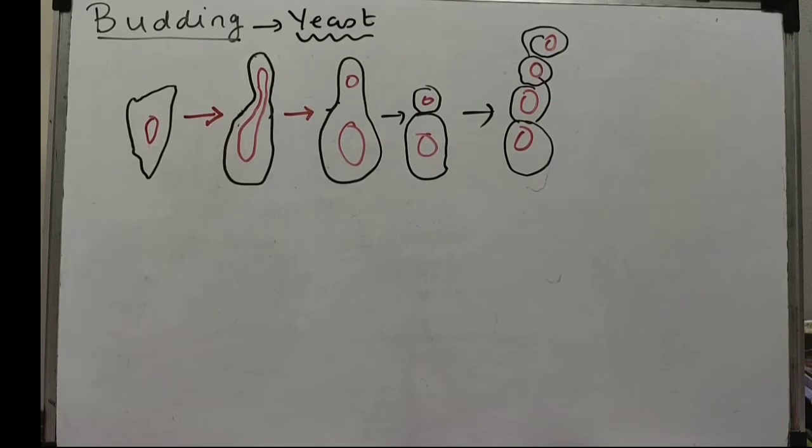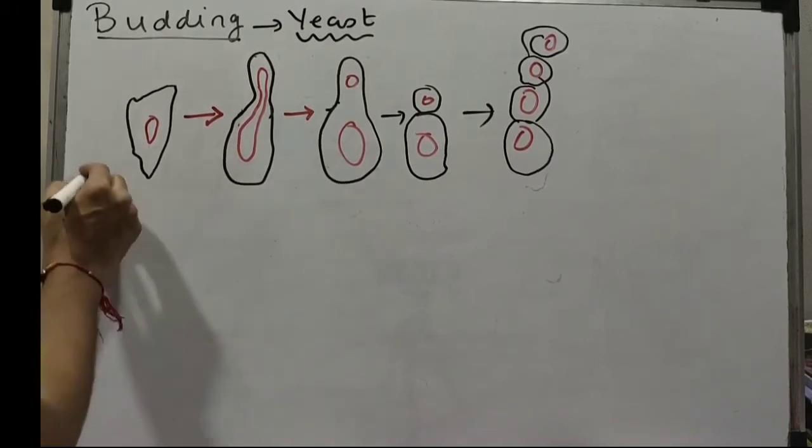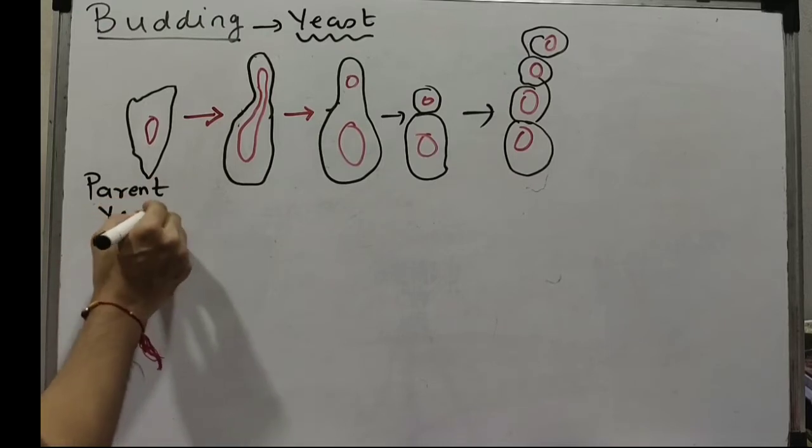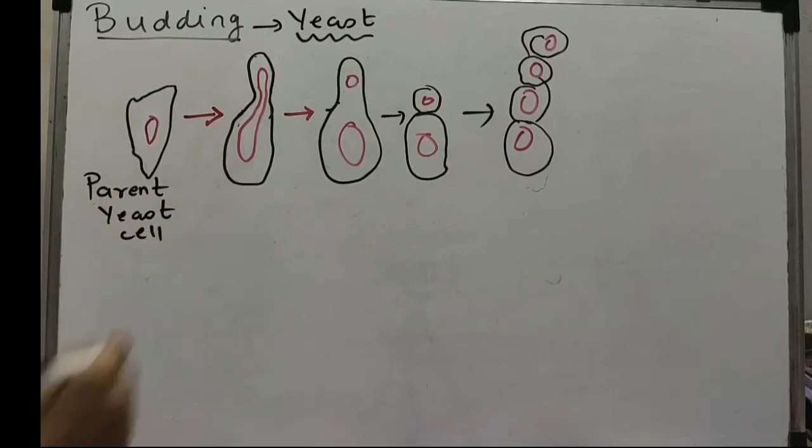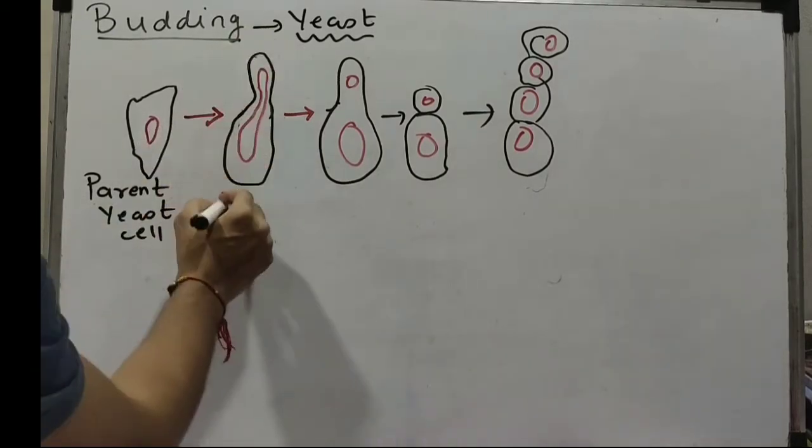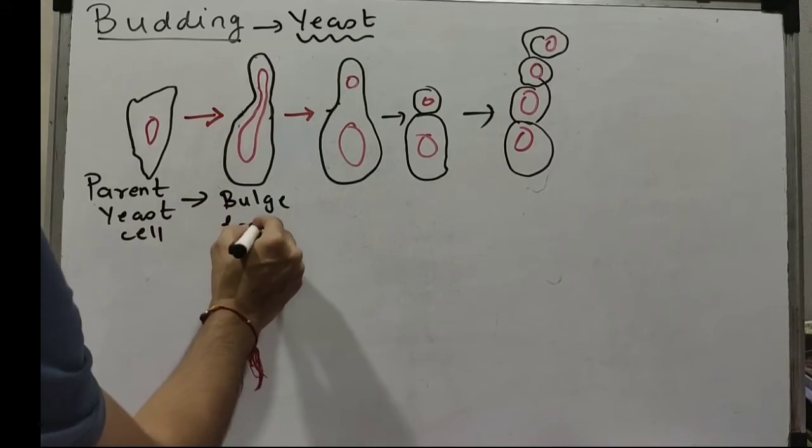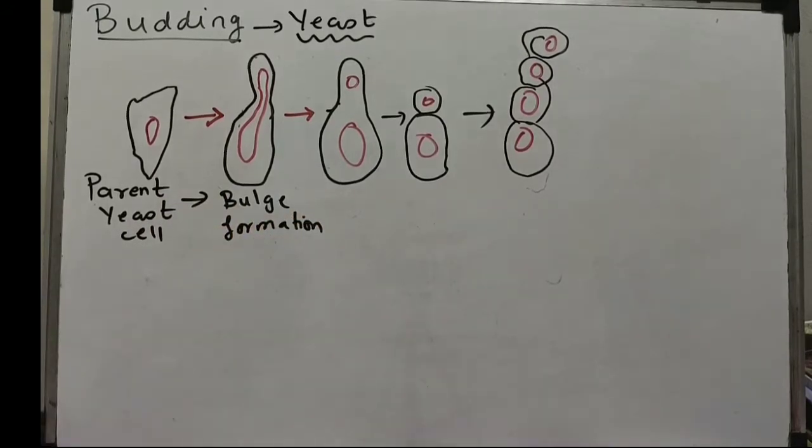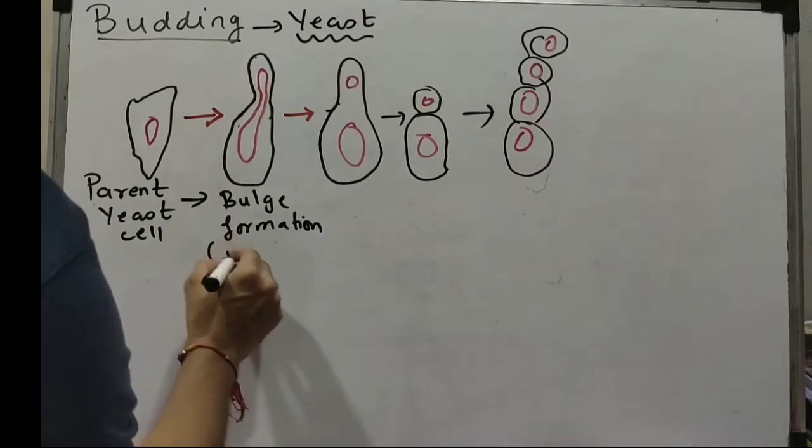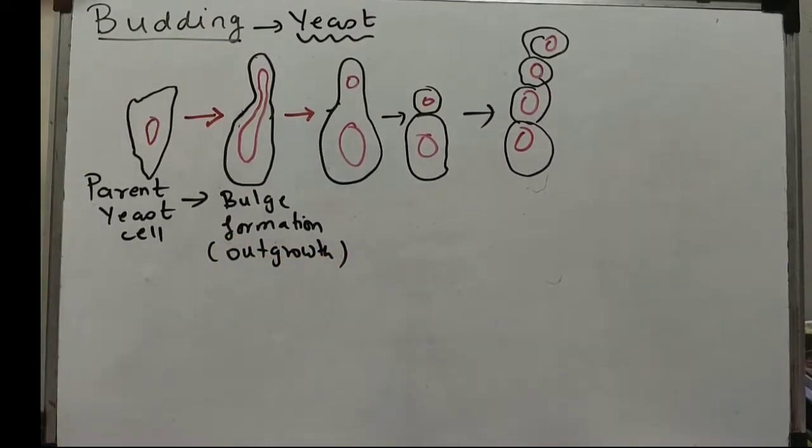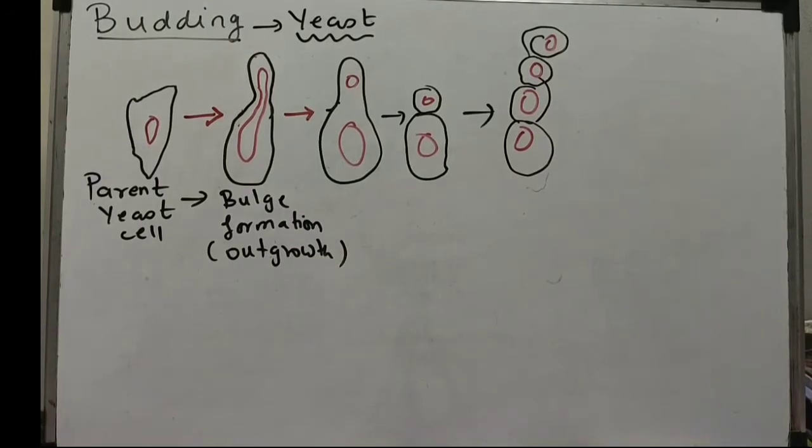What happens is there is a parent yeast cell. It's normal. What will happen is there will be a bulge formation. Now we're talking about an outgrowth - normal growth, we're talking about an outgrowth.